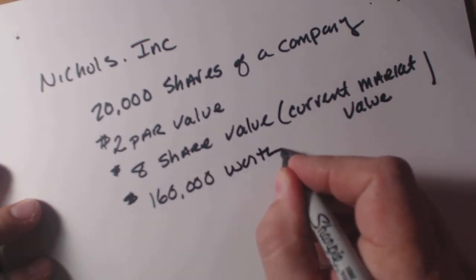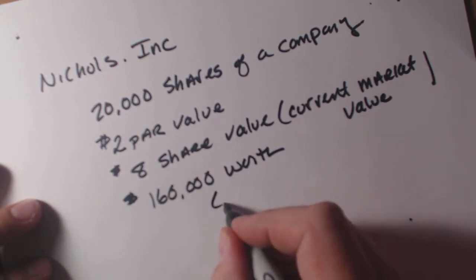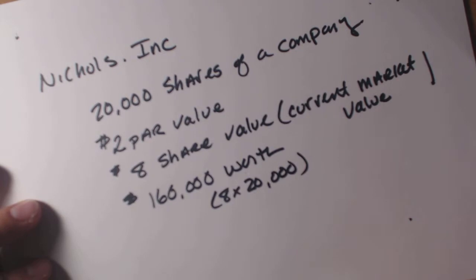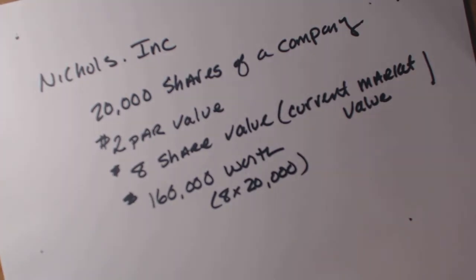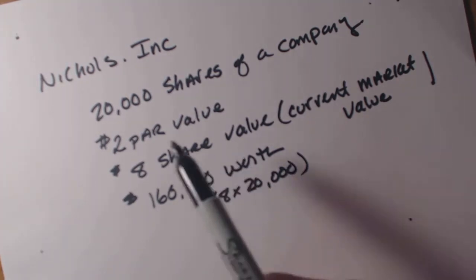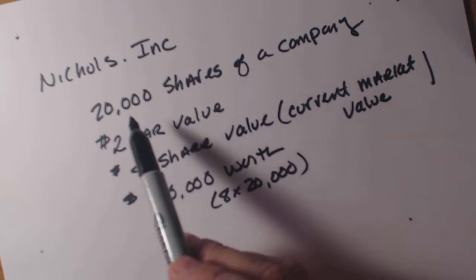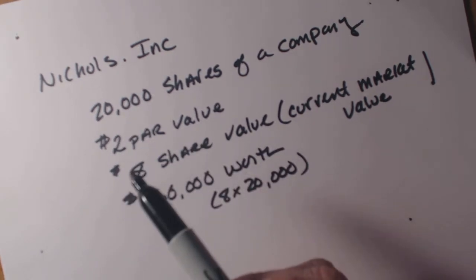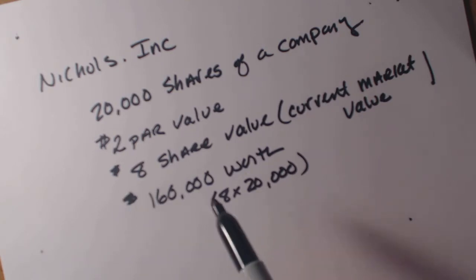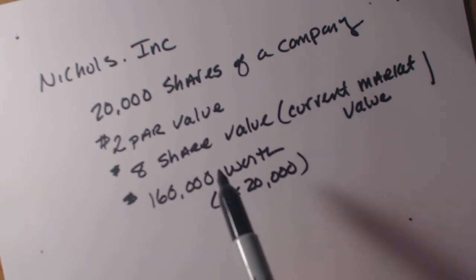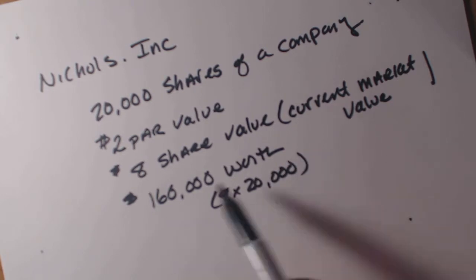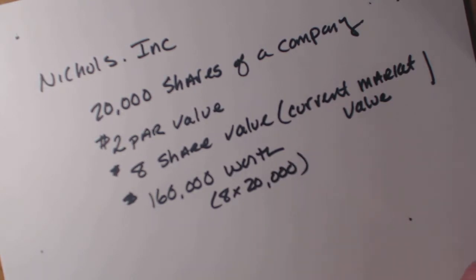If you're on Shark Tank, this is what they do to help determine the value of companies. So here's what we know: we have 20,000 shares listed at a $2 par value on the face of the stock, and the share value in the market is $8, because the company is worth about $160,000. That value could be based on a number of things, but it's worth $160,000.